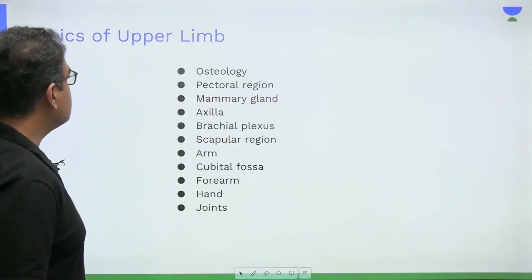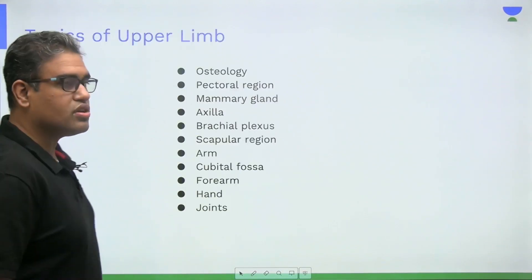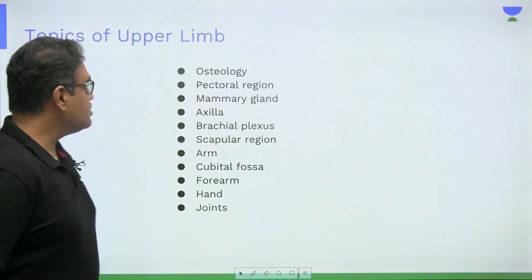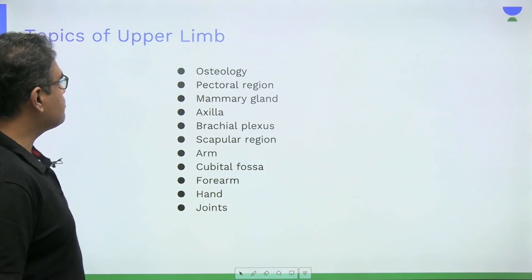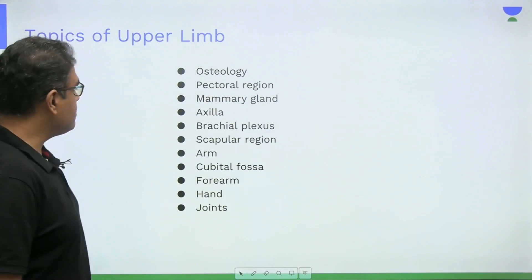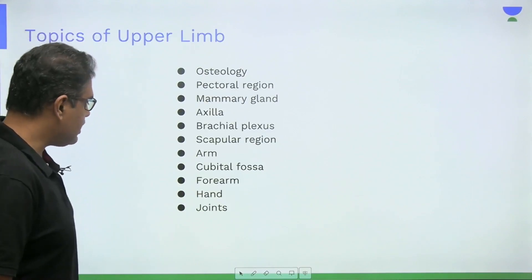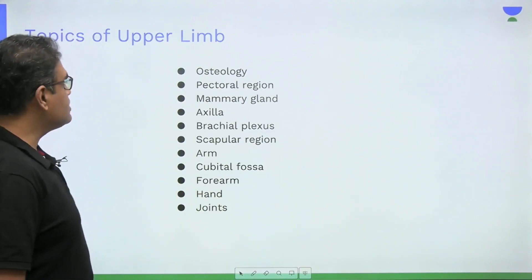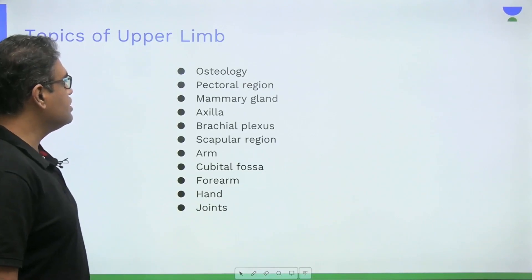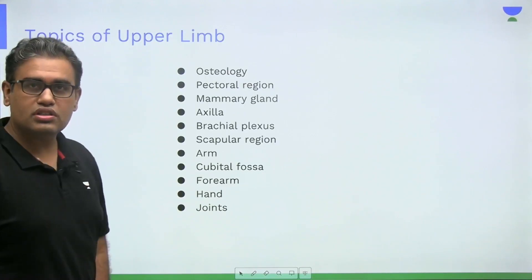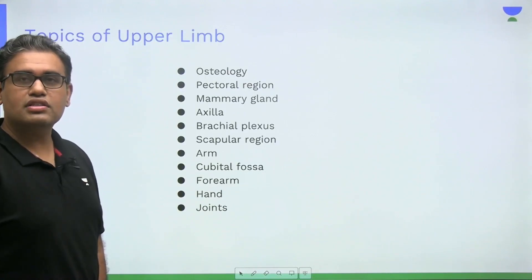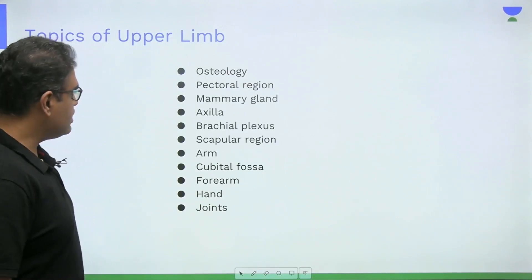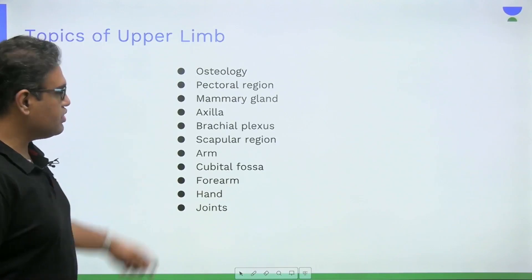These are all the topics of the upper limb which we are going to cover — osteology, pectoral region, mammary gland, up till the hands and the joints. In this particular session we are going to touch on the osteology, the pectoral region, and the mammary gland part, and subsequently we will continue with all of them.